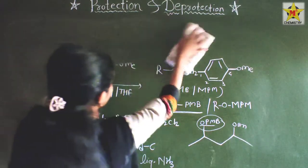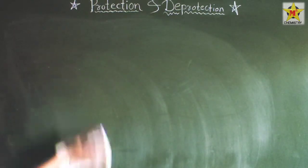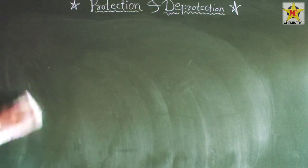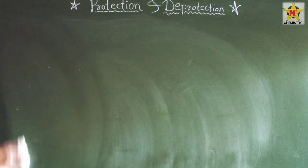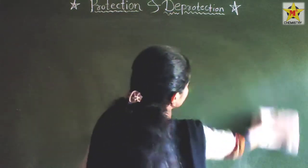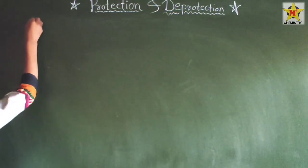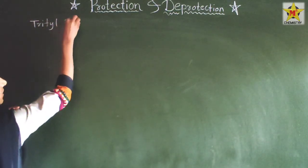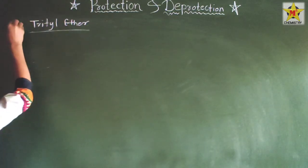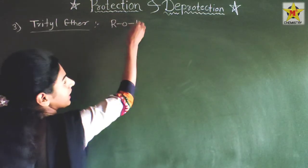Our third protecting group is trityl protection. Trityl means there is presence of three phenyl groups — that is why it is called trityl ether.